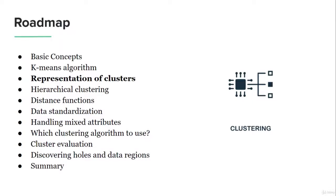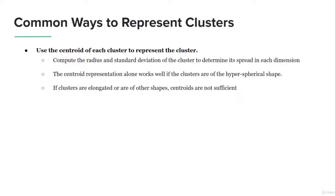Let's talk about different ways to represent clusters. One common way is to use the centroid as the representation of the cluster. We calculate the radius considering the centroid as the center point, and we also compute the standard deviation of the cluster. In this way, we can estimate the spread of the cluster in each dimension, and along with the radius, we can use this information to represent the cluster.